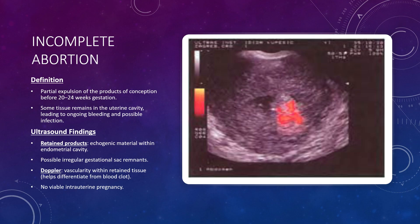With incomplete abortion, part of the pregnancy tissue is expelled before 20 to 24 weeks, but some remains inside the uterus. This retained tissue can cause ongoing bleeding and, if untreated, may lead to infection. On ultrasound, you may see echogenic material within the endometrial cavity, sometimes with irregular gestational sac remnants. Using Doppler, vascularity within the tissue helps distinguish it from a simple blood clot, and importantly, there is no viable intrauterine pregnancy.